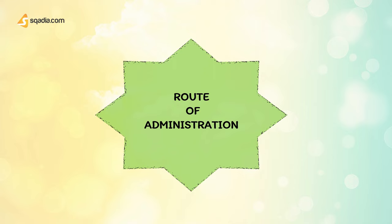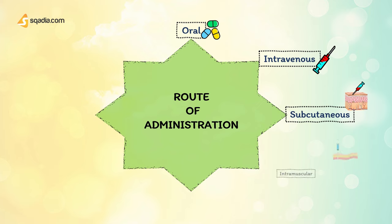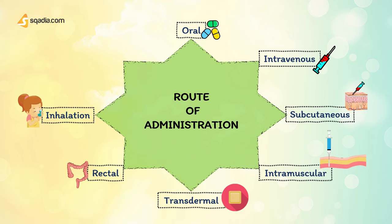There are multiple routes through which a drug can enter our body. These include oral, intravenous, subcutaneous, intramuscular, transdermal, rectal, inhalation, and sublingual.